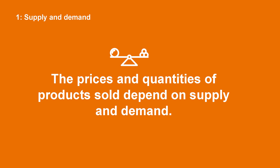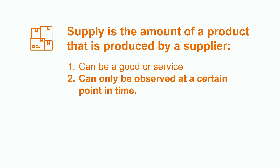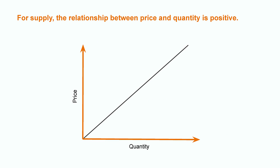Supply and demand: the prices and quantities of products sold depend on supply and demand. We explain those laws in a simplified context where all other factors are supposed constant. Supply is the amount of a product that is produced by a supplier. It can be a good or a service, and can only be observed at a certain point in time. The more the price of a product increases, the more quantity of this product the supplier offers, and vice versa. This allows the producer to maximize its profits. The relationship between price and quantity is hence positive.